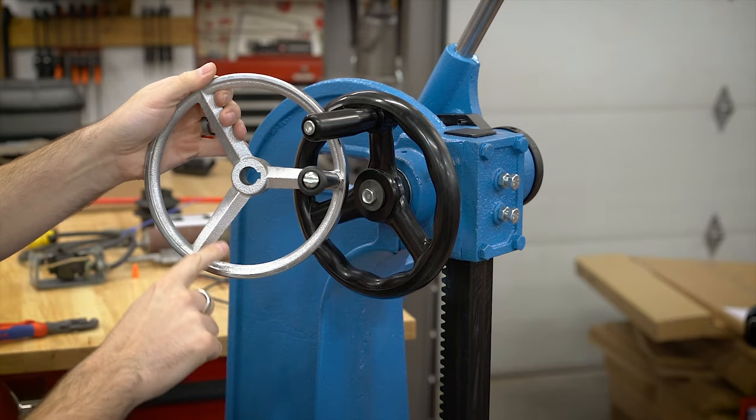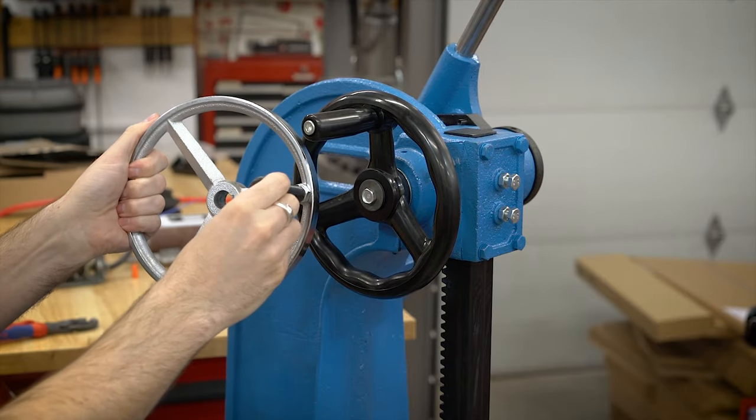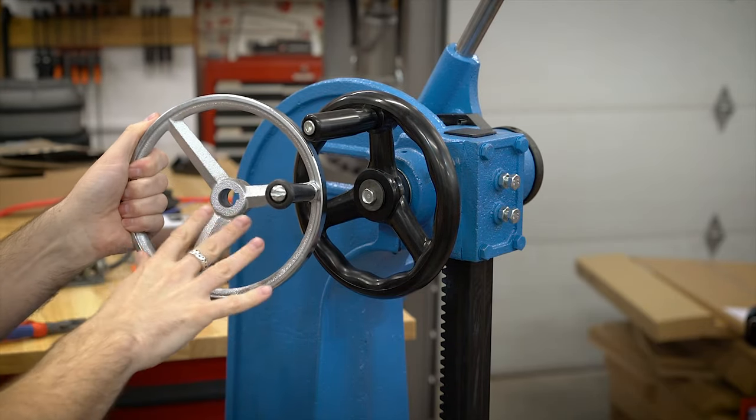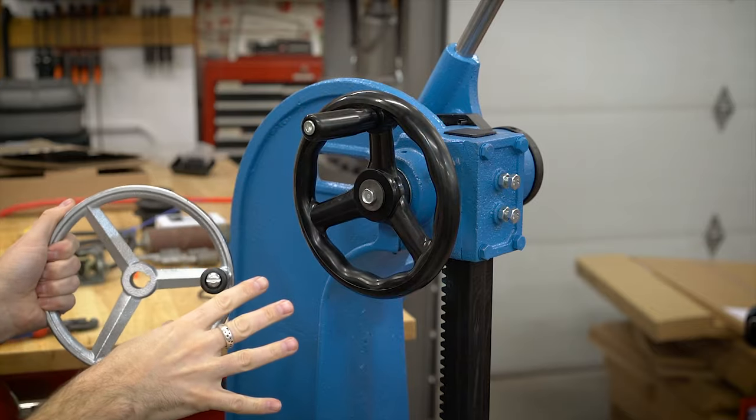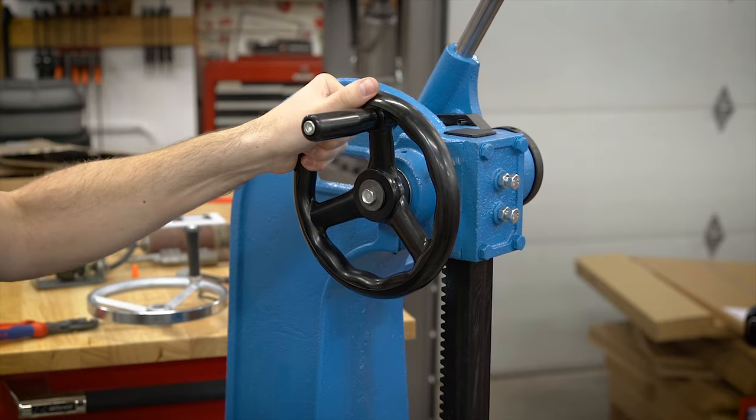The original hand wheel that it came with was kind of crappy. It's really sharp through here and just a really rough casting. It doesn't really feel all that great being used. And it's just really cheap and makes the whole thing overall feel a lot worse. So I actually went and replaced it with one of these plastic handles.